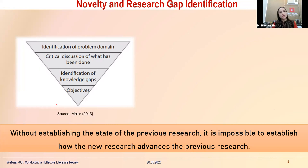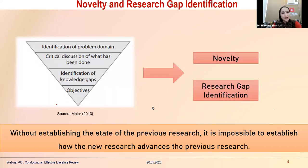Without establishing the state of previous research, it is impossible to establish how your new research will advance it. There is no point researching something already done — your research should always be a step ahead, leading other researchers toward unknown directions. Identifying the problem, defining it, discussing the research gap, and framing your objectives leads to establishing the novelty and originality of your research, which are very important outcomes of your literature review.